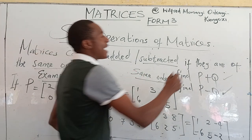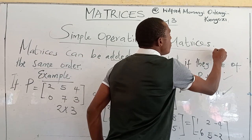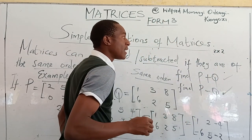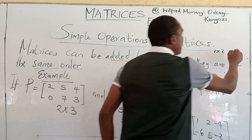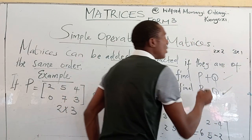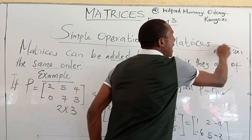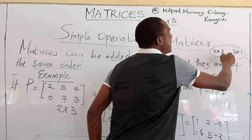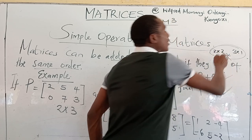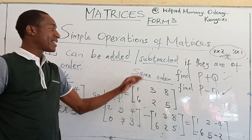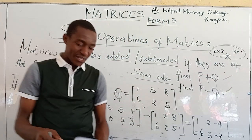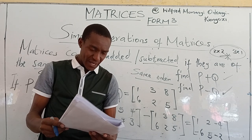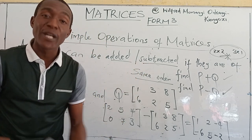If you have a 2 by 2 matrix and another one that is 3 by 1, for example, these ones are not of the same order. So it is not possible to either add or subtract them.